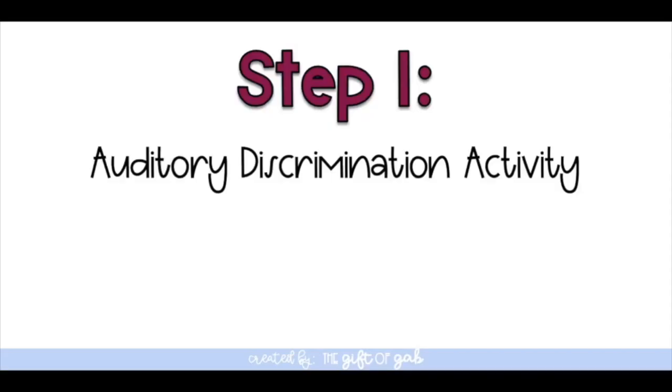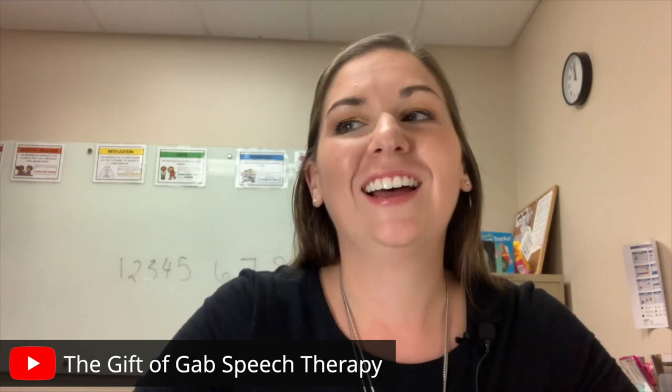The very first thing we need to start working on is auditory discrimination. That means you need to make sure that your student can hear the difference between 'red' and 'wed,' 'rose' and 'woes.' So the first thing you're going to do is design an activity that helps your student hear the difference between 'red' and 'wed.'